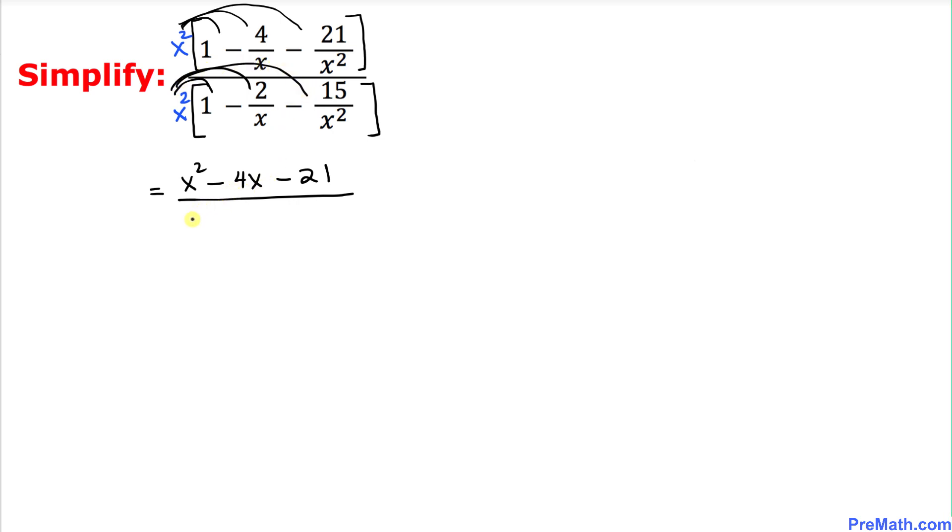The denominator is going to be the same thing. We are going to distribute over here as well and that is going to give us x square minus 2x minus 15. And we can see that we no longer have fractions.